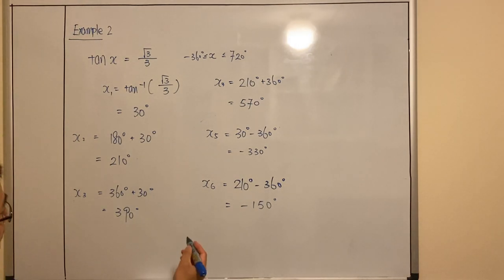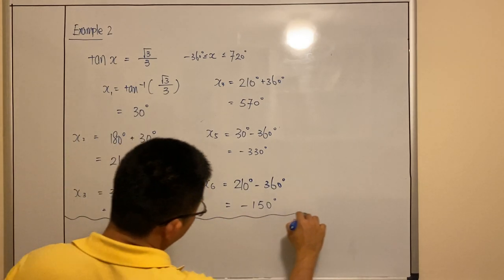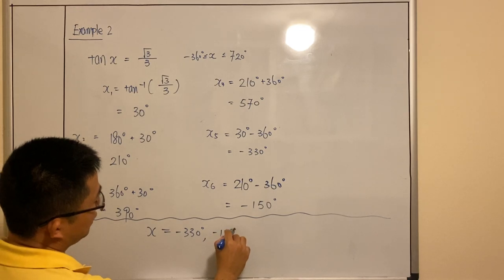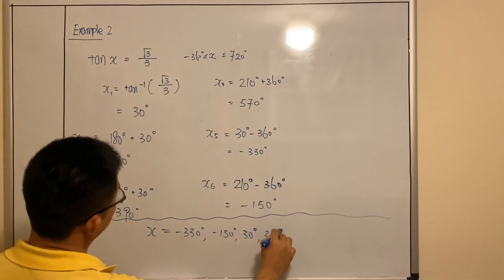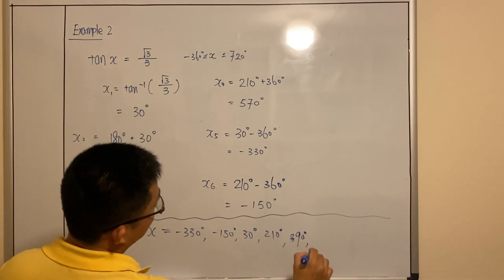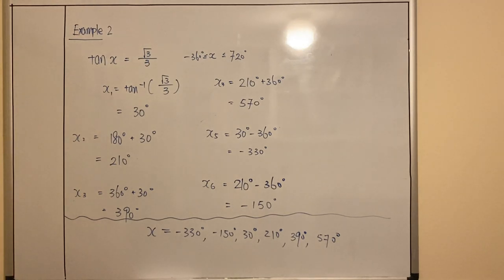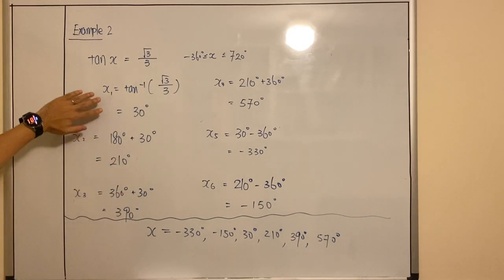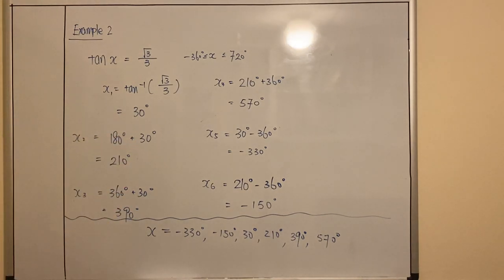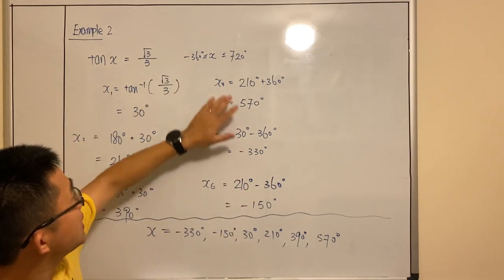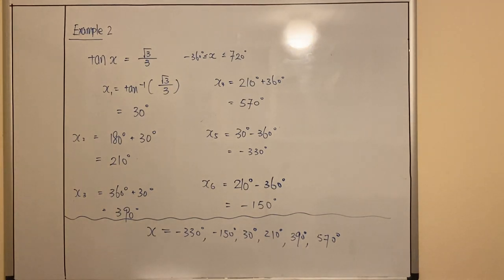In the exams, I prefer you write the final answers in ascending order so it's easier for teachers to mark. So the six answers are: negative 330, negative 150, 30, 210, 390, and 570 degrees. Those are all the answers for that question. Step 1 — domain. Step 2 — special angle table or calculator for the first angle. Step 3 — ASTC for the second angle. Step 4 — plus or minus 360 to work out all answers within the domain.